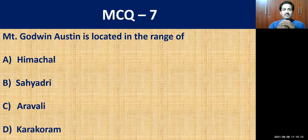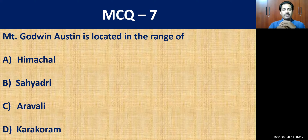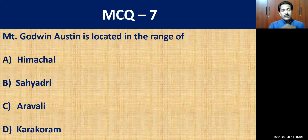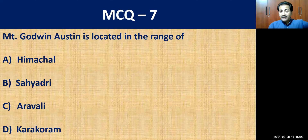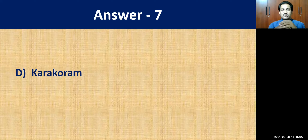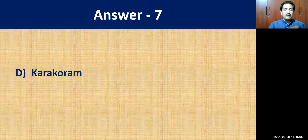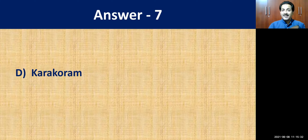MCQ question number seven: Mount Godwin Austin is located in which range? Godwin Austin is located in the northern part of the Himalayas — that is the Karakoram range. The correct answer is Karakoram.